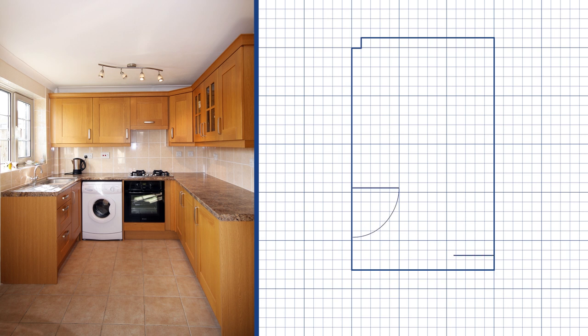Measure and mark any permanent fixtures such as windows, doors, and boilers. It's best for your measurements to be in either centimetres or millimetres.